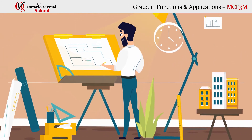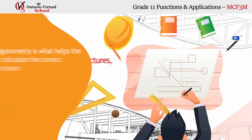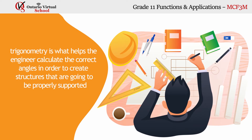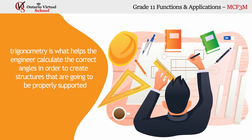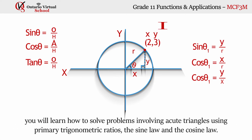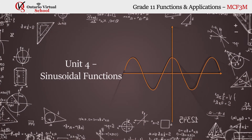Unit 3: Trigonometry and Acute Triangles. Many aspects of architecture and engineering rely on triangular supports when creating different structures. Trigonometry is what helps the engineer calculate the correct angles in order to create structures that are properly supported. In this unit you will learn how to solve problems involving acute triangles using primary trigonometric ratios, the sine law, and the cosine law.